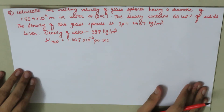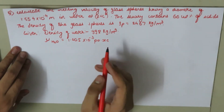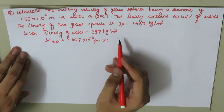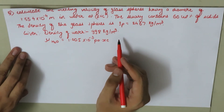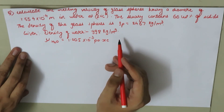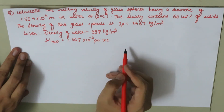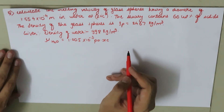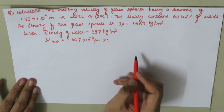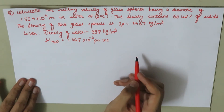Now let's work on a problem. Calculate the settling velocity of glass spheres having a diameter of 1.554 × 10⁻⁴ meters in water at 20°C. The slurry contains 68% solids. The density of the glass sphere rho_p = 2467 kg/m³, the density of water rho = 998 kg/m³, and the viscosity of water mu = 1.005 × 10⁻³ Pascal seconds.